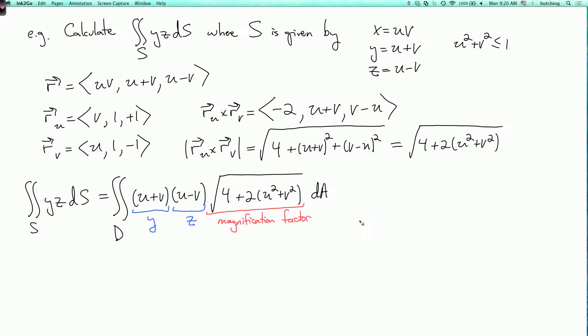Now we can multiply this out to get u squared minus v squared, and that allows us to split the integral into two parts. D, by the way, is the unit disk.